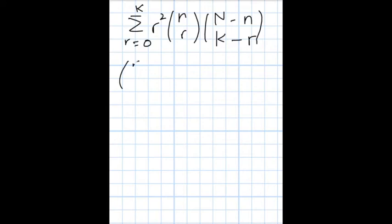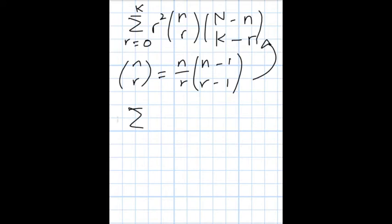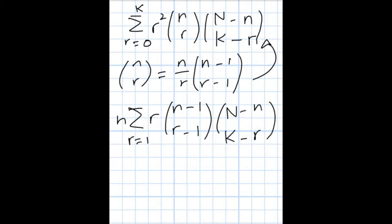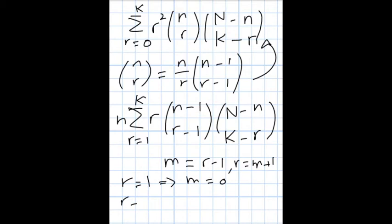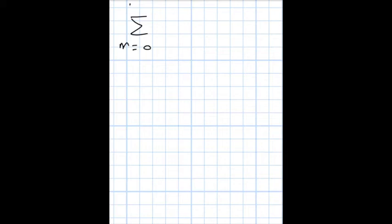We use the combinatorial relation to write r times C(n, r) as n times C(n-1, r-1), and plug it in. We get an n out front and r times C(n-1, r-1) times C(n minus n_k, k minus r), with r going from 1 to k. Now we make a change of variable: let m = r - 1, so r = m + 1. If r=1 then m=0, and if r=k then m=k-1.